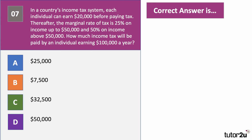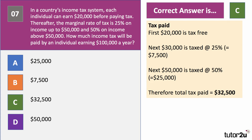The individual earning $100,000 a year will pay $32,500 in tax. Here's the explanation: the first $20,000 is tax-free, so no tax on that. The next $30,000 — up to $50,000 — is taxed at 25%, giving $7,500. The remaining $50,000 — from $50,000 to $100,000 — is taxed at 50%, giving $25,000. Total tax: $7,500 plus $25,000 equals $32,500.